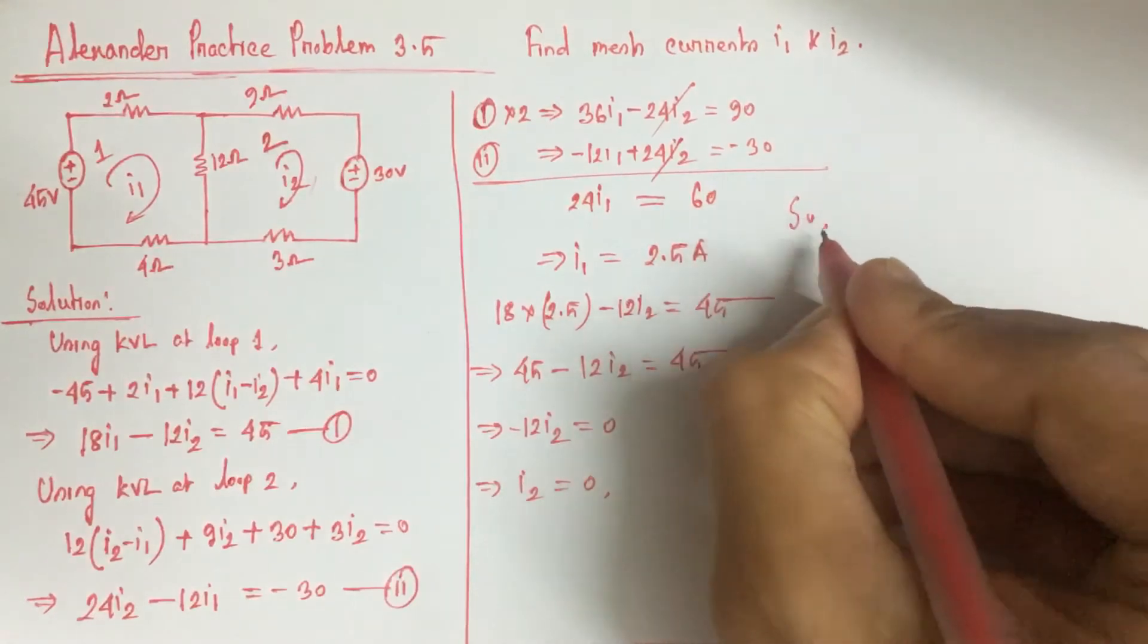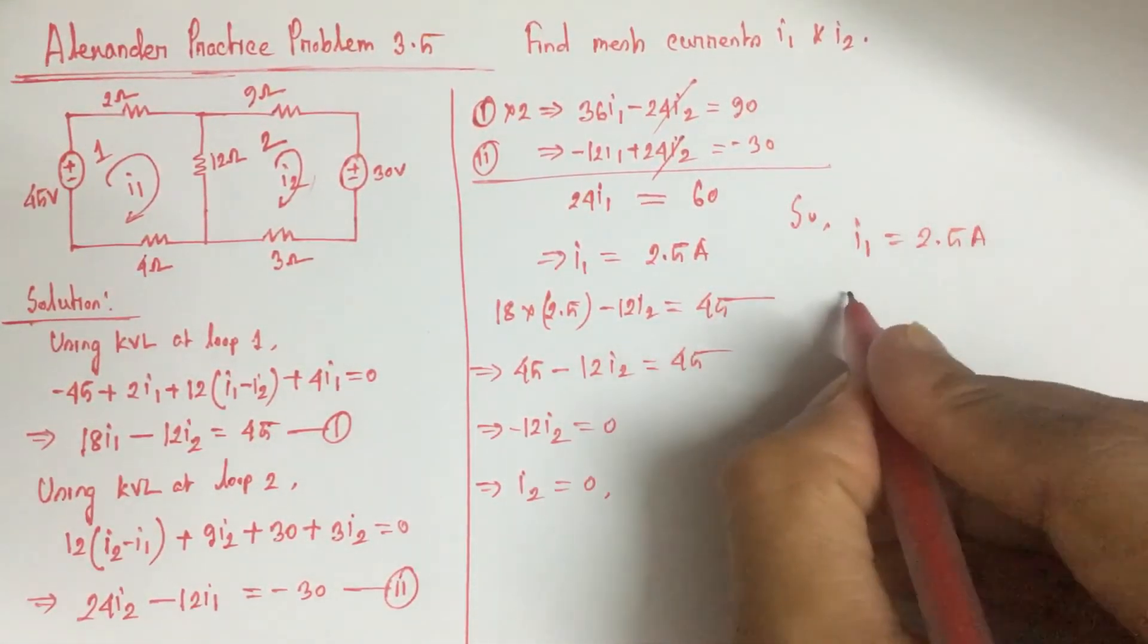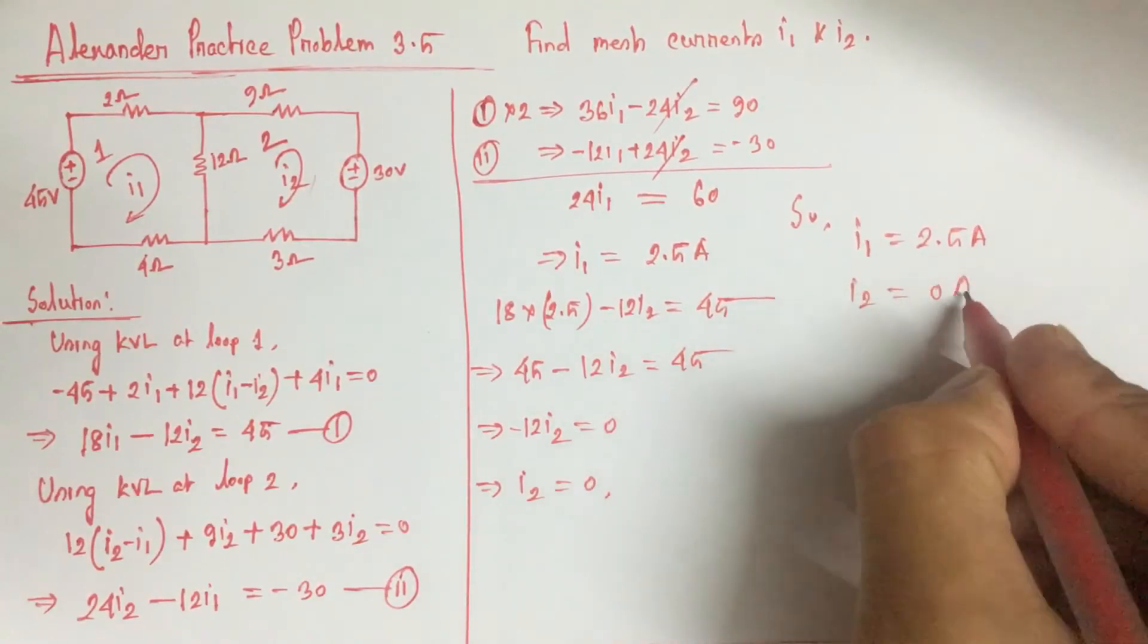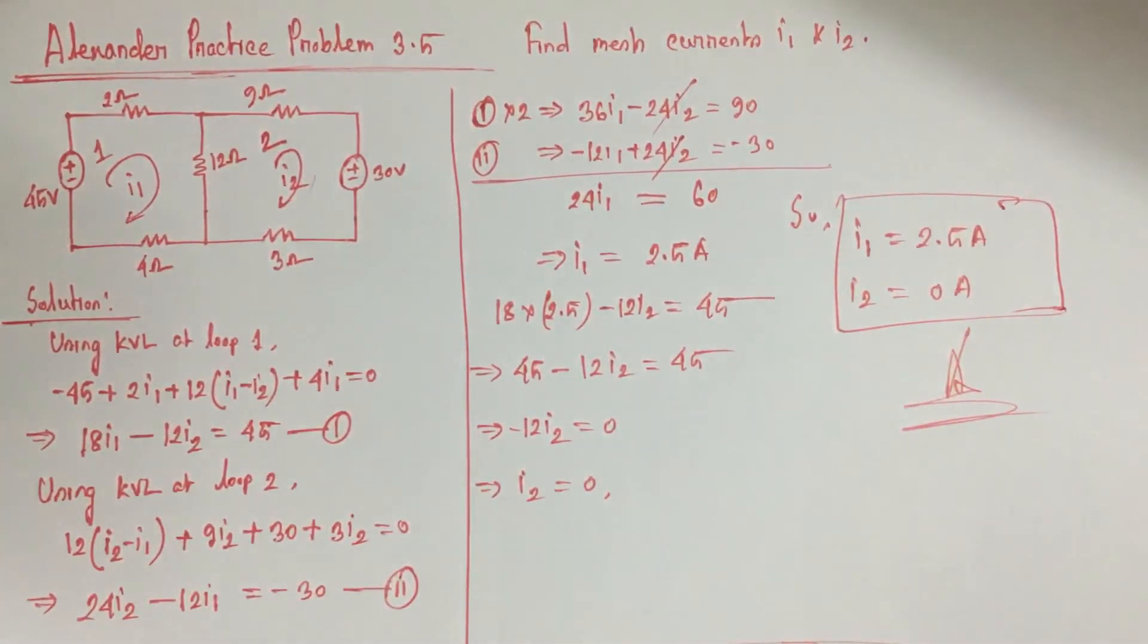So here I1 equals 2.5 ampere and I2 equals 0 ampere. This is the answer. Thank you.